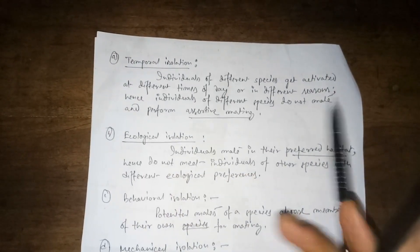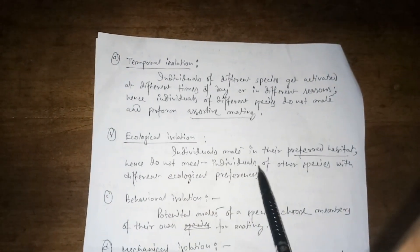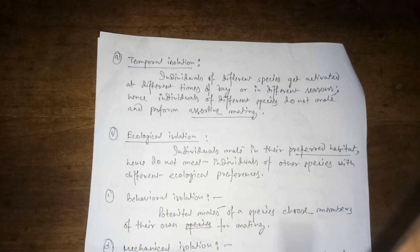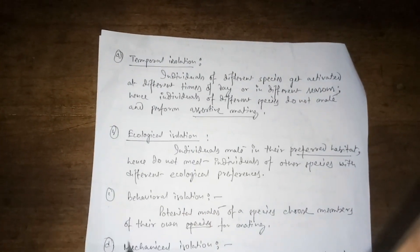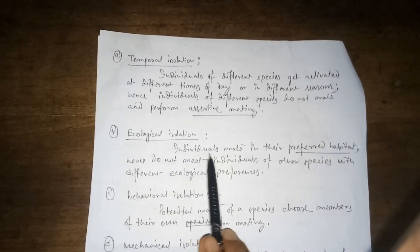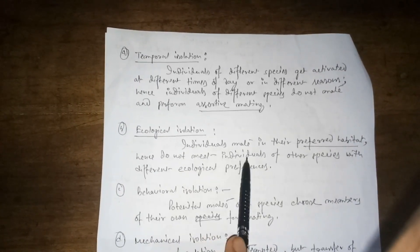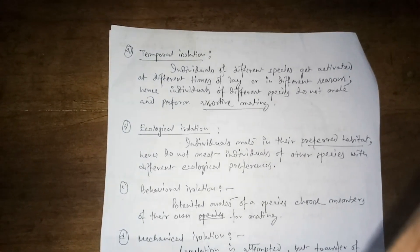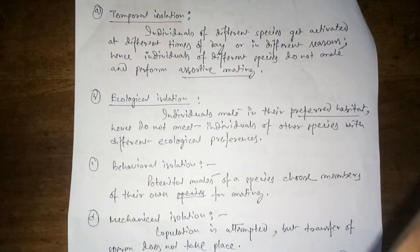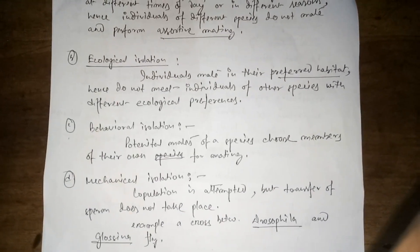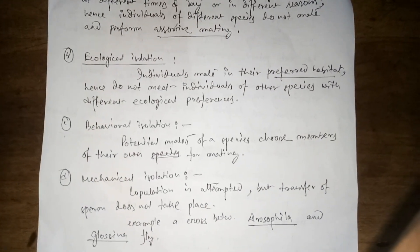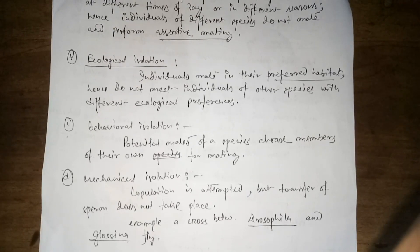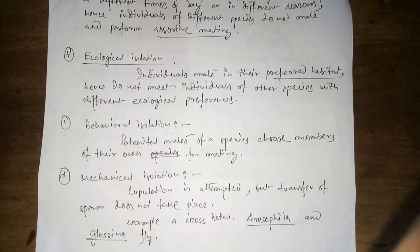Moving on to ecological isolation: individuals mate in their preferred habitat, hence they do not encounter individuals of other species with different ecological preferences. Next, behavioral isolation: the potential mates of a species choose members of their own kind for mating.